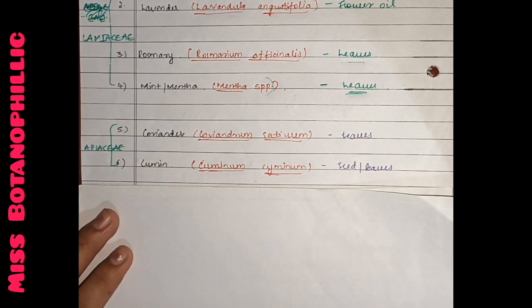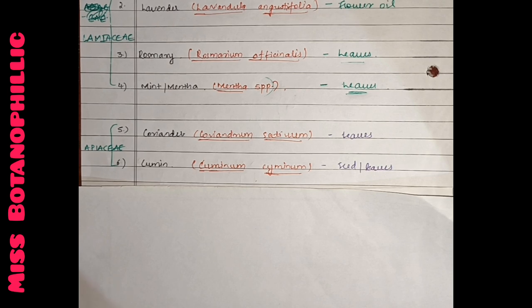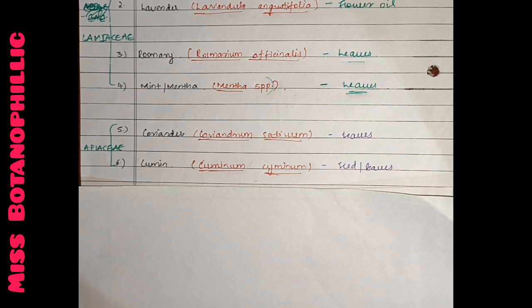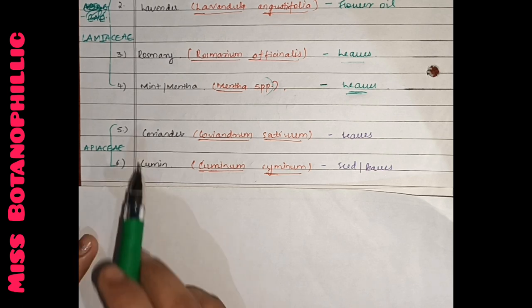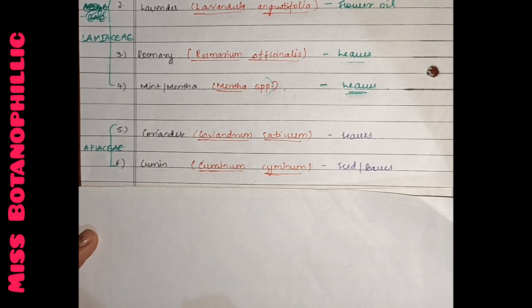After this, we have Apiaceae family. The Apiaceae family is called spices, the masala family. Most of the members will be from Apiaceae family in cases of spices. So, coriander - Coriandrum sativum. It is used in leaves and aroma extracts.